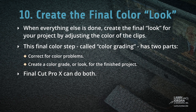When everything else is done, create the final look for your project by adjusting the color of the clips. This final color step, called color grading, has two parts. First is to correct for color problems. And second is to create a color grade or a look for the finished project. With Final Cut Pro X, you can do both.